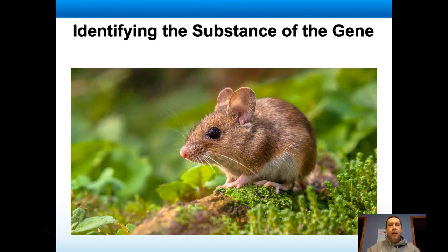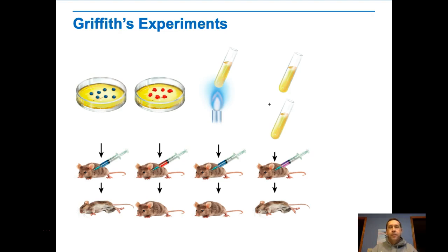In this video we're going to look at the research that has led to our understanding of DNA containing the genetic information. The first experiment we're going to look at was by Griffith. Griffith was working on a vaccine for pneumonia and there are two strains of the bacteria: a smooth strain and a rough strain. The smooth strain is virulent or causes disease, and the rough strain is non-virulent — it doesn't cause disease.